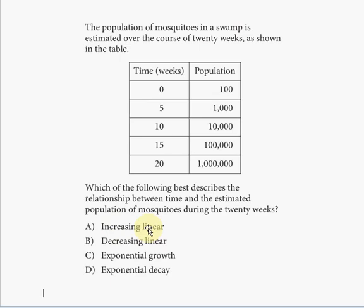It says increasing linear for choice A. Well, let's see what's going on. You see that time is given in increments of five weeks. So for every five weeks, the population increases by a factor of ten. Because 100 times 10 is 1,000, 1,000 times 10 is 10,000, 10,000 times 10 is 100,000, 100,000 times 10 is 1 million.